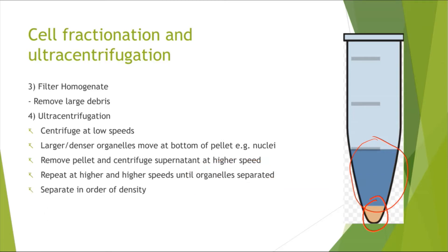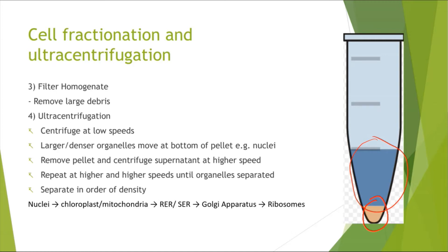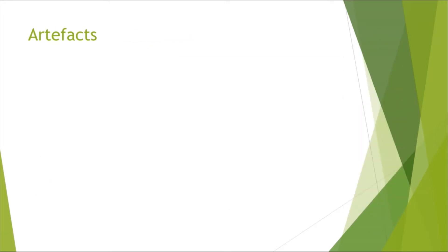Separation occurs in order of density. The nuclei, being the most dense, separate first and form the pellet first. Then chloroplasts and mitochondria, followed by rough and smooth endoplasmic reticulum, then the Golgi apparatus, and finally ribosomes, being the least dense.